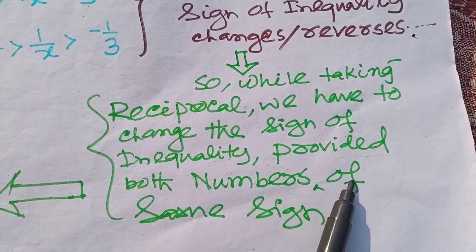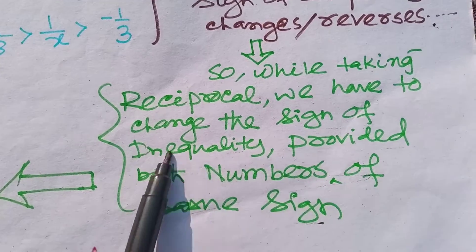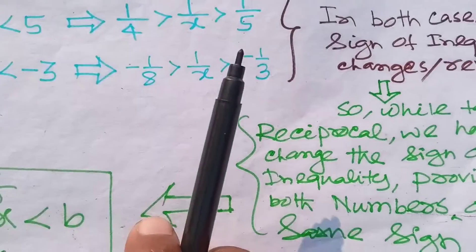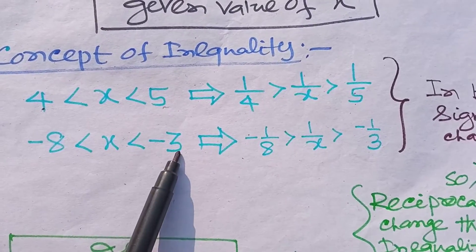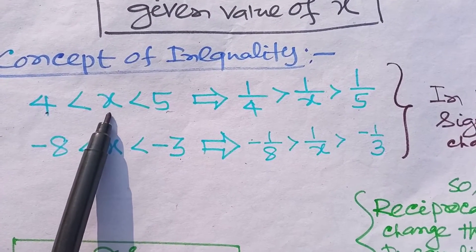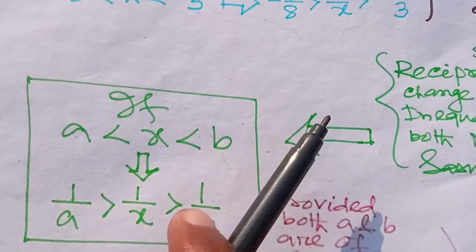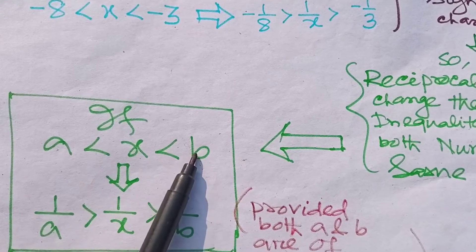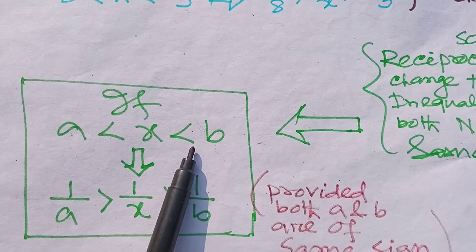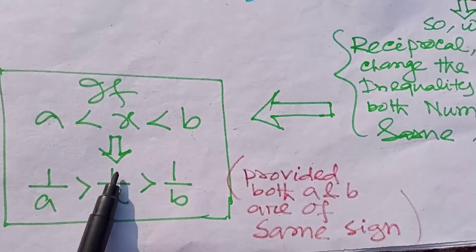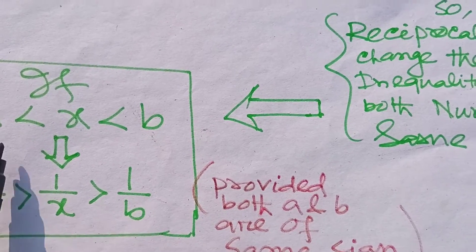While taking the reciprocal we have to change the sign of inequality, but provided both the numbers are of the same sign. This is very important — both numbers should be of the same sign, either both positive or both negative. In general, if x belongs from a to b, then on taking the reciprocal, 1/x will belong from 1/b to 1/a, provided a and b are of the same sign.